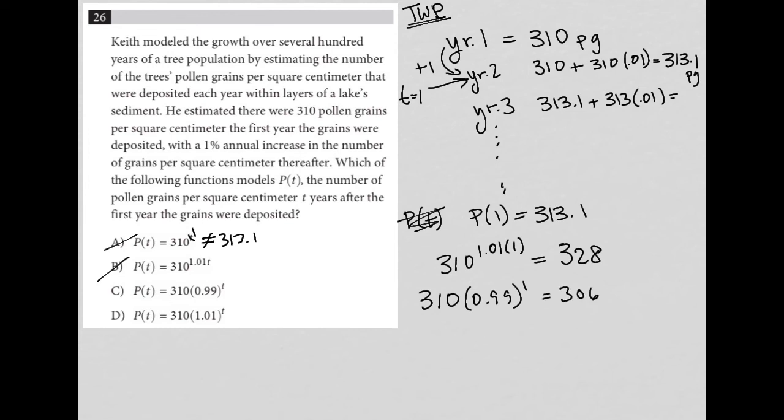And then how about 310 for choice D, 310 times 1.01 to the first, which is practically just 310 times 1.01. And that does, in fact, give us the answer that we were looking for. It's the only answer choice that gave us 313.1, which means choice D must be the correct answer.